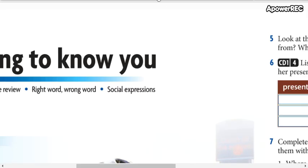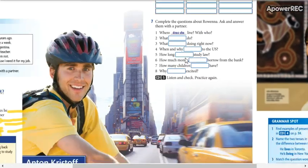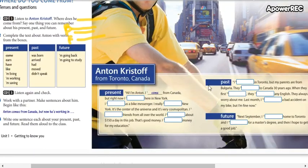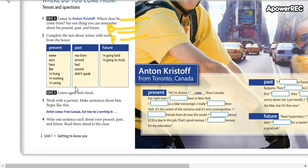Here we have a text. I'm going to make it smaller. Here. About his present, his past, and his future. Use these verbs to complete.